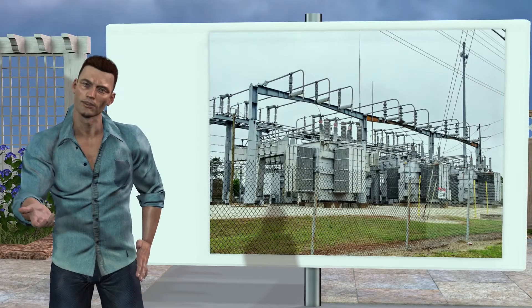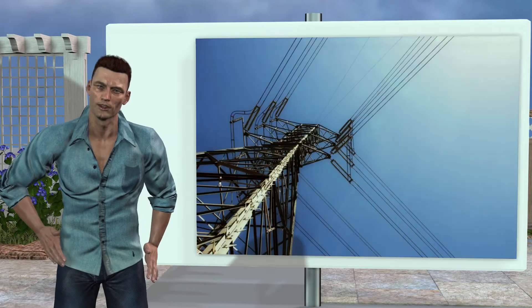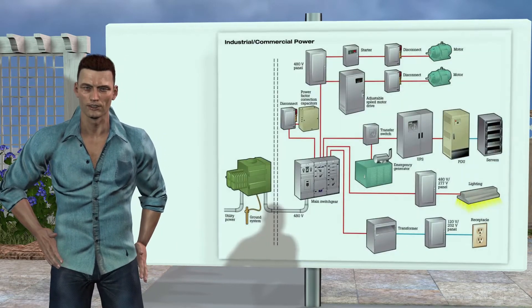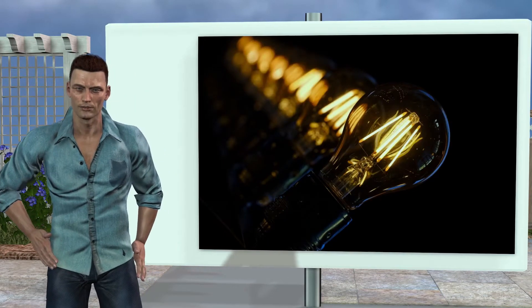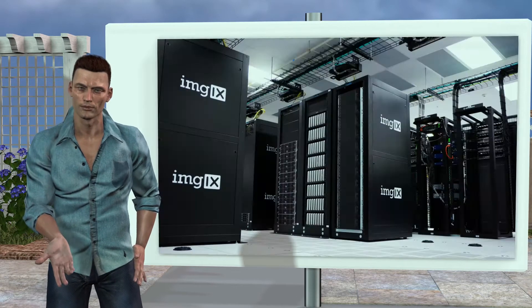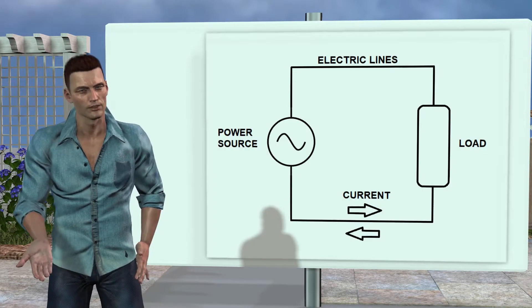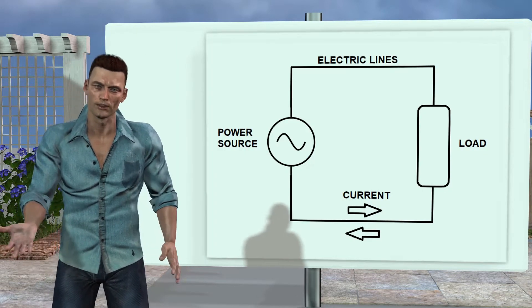In an electrical installation, we will have a voltage source that feeds, through the distribution lines, a series of electrical loads, such as lights, motors, computers, etc., giving rise to the appearance of electrical currents.